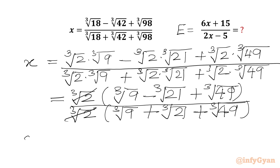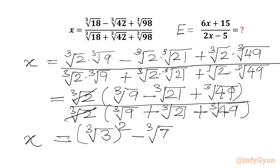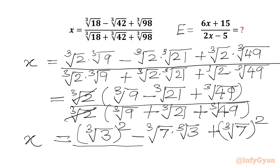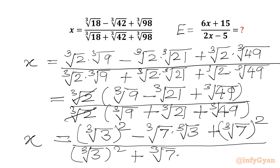Cube root 2 and cube root 2 cancel. So x will be equal to cube root 9 — can we write that as cube root 3 whole square? — minus cube root 21, which we can write as cube root 7 times cube root 3, plus cube root 49, which can be written as cube root 7 whole square, over cube root 3 whole square plus cube root 7 times cube root 3 plus cube root 7 whole square.